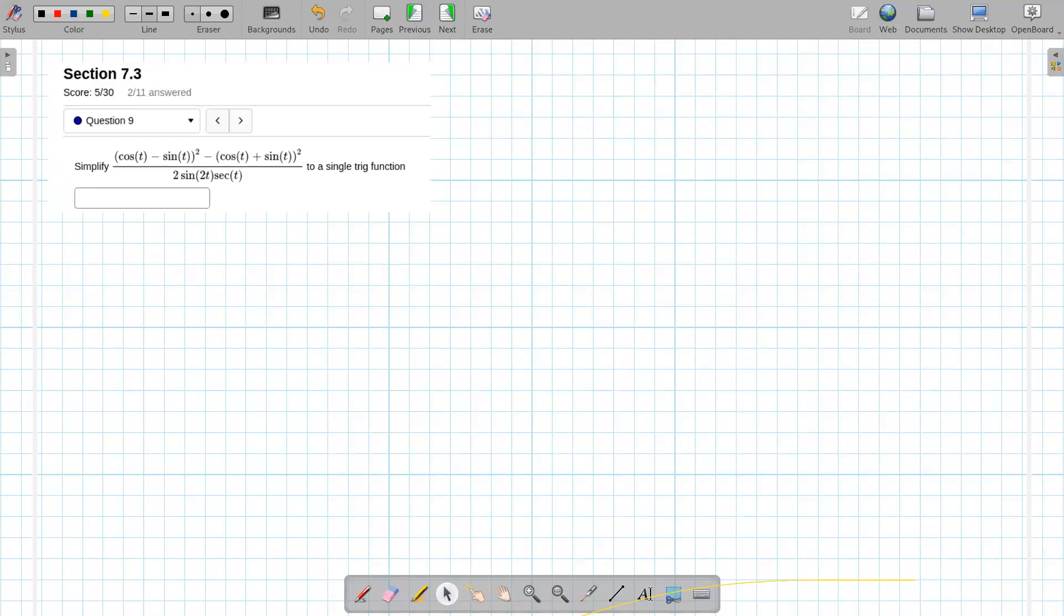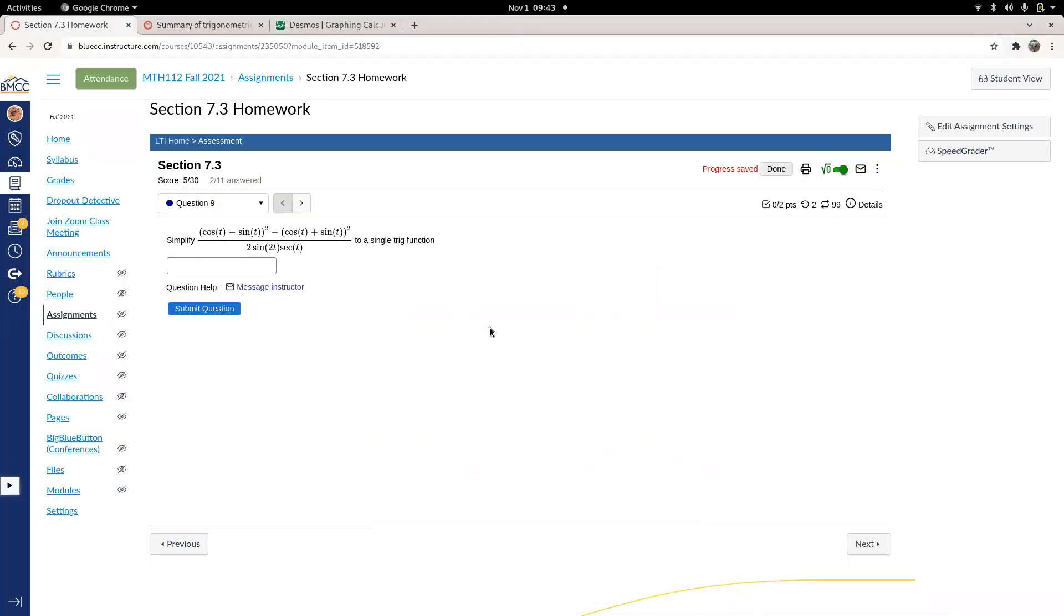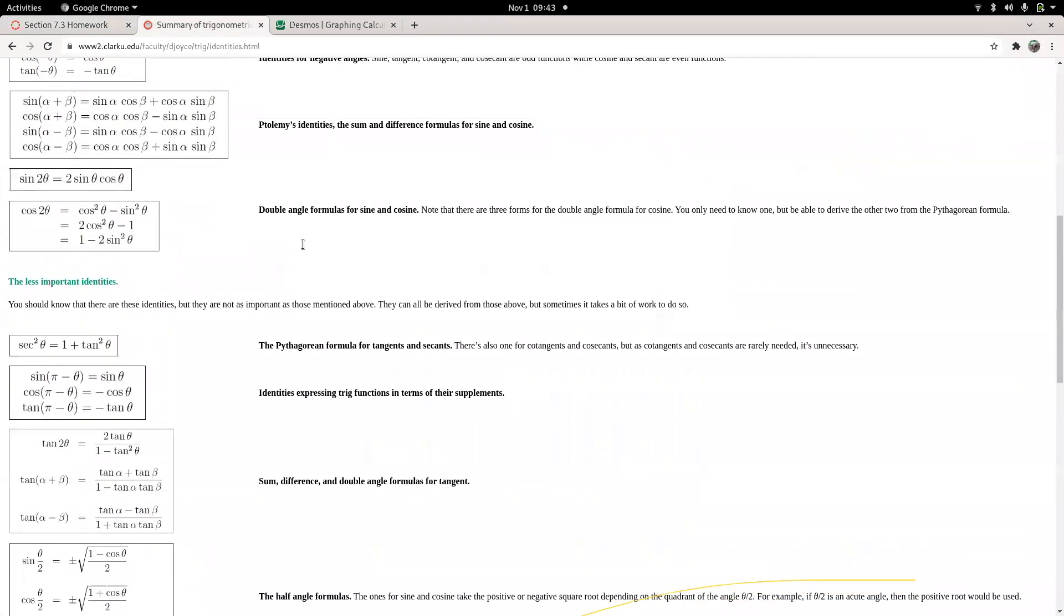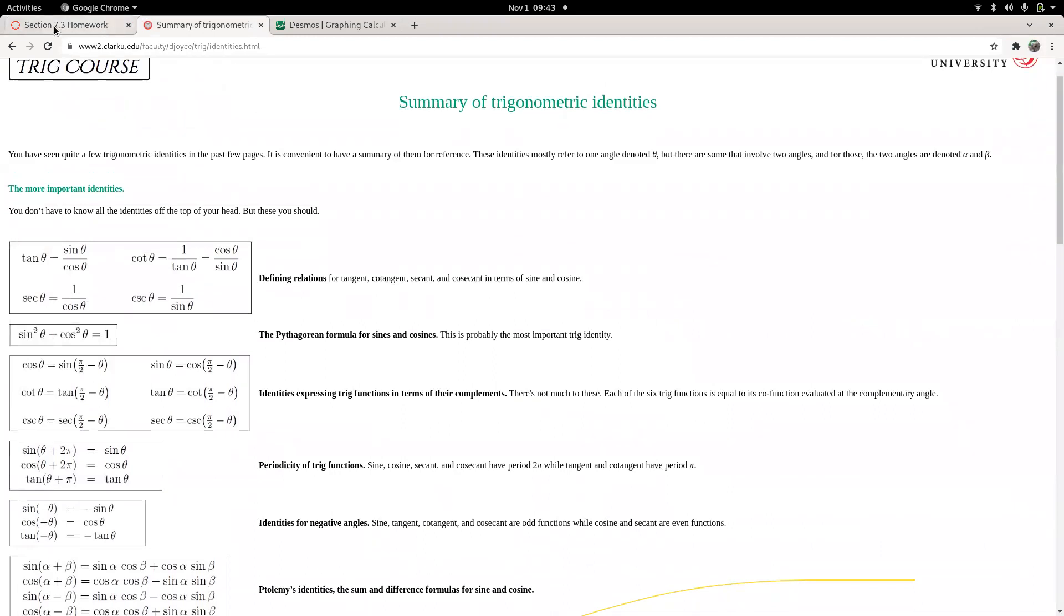So, supposedly, this can simplify to a single trig function, and given all of the wild identities, that is not out of the realm of possibility. So, let's see what we can do here.